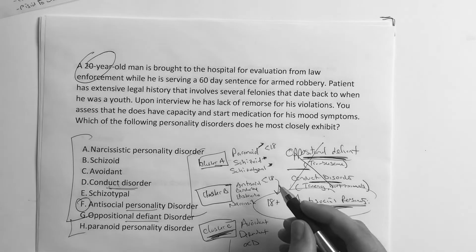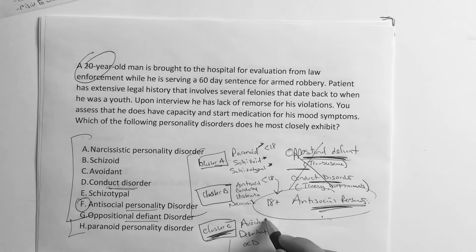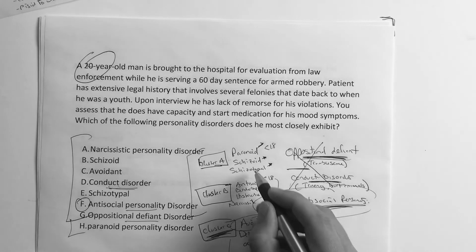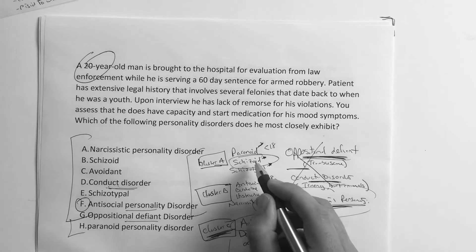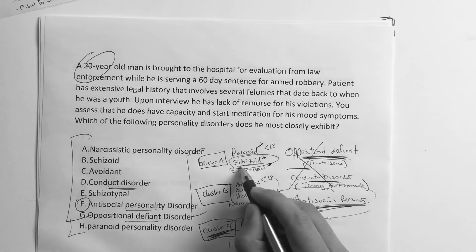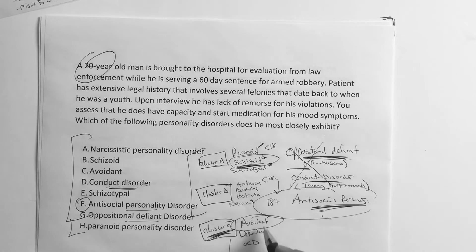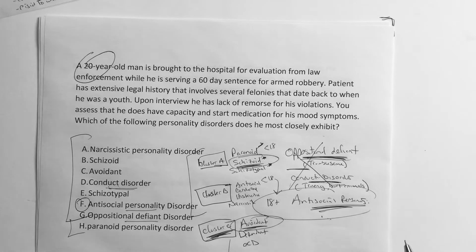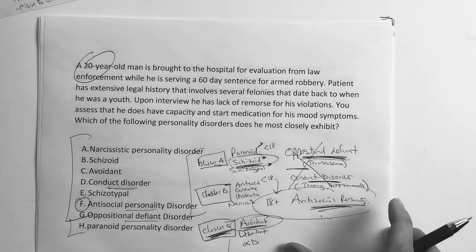You better know the difference between avoidant and schizoid. Schizoids don't want to hang out and don't care. Avoidants want to hang out but are afraid of getting rejected.